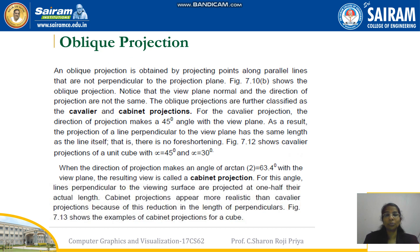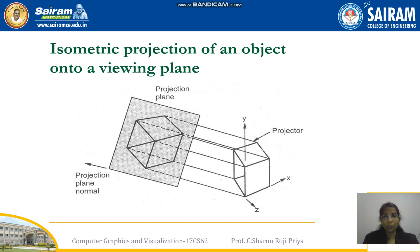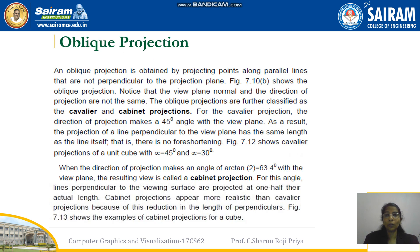Coming to oblique projection: in orthographic projection, the angle between the projection lines and the view plane is 90 degrees. But in oblique projection, it won't be 90 degrees. Oblique projection is divided into two types — cavalier projection and cabinet projection — depending upon the angle that the projection lines make with the projection plane.